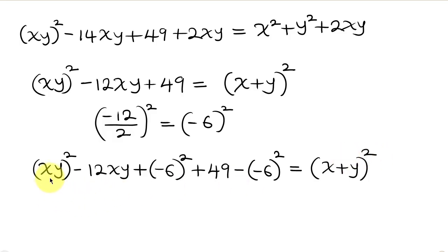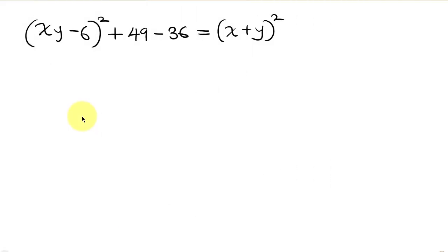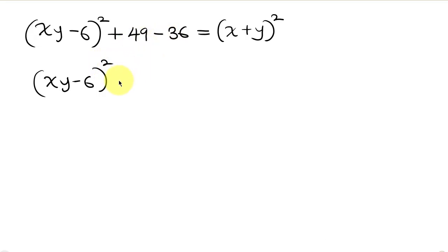Notice that this is a perfect square of the form (xy - 6)². Plus, 49 minus (-6)² is 49 minus 36, equals (x + y)². Simplifying further, we have (xy - 6)² + 13 = (x + y)².